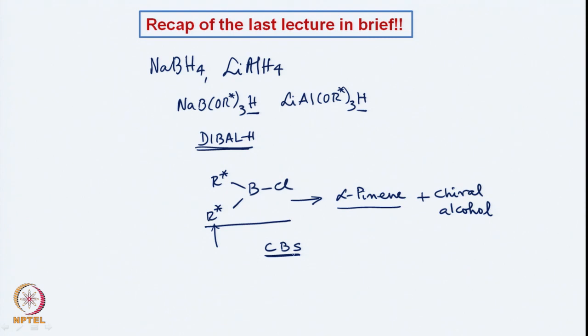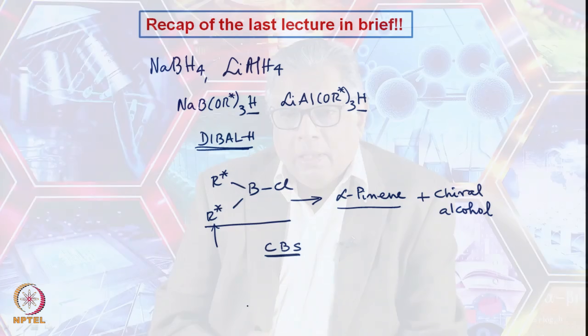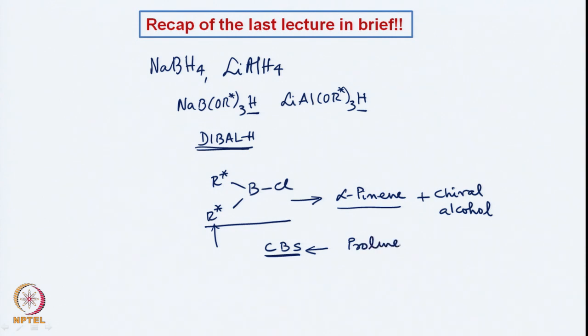But then we introduced the Corey-Bakshi-Shibata ligand, a chiral part which allows modification of BH₃. This Corey-Bakshi-Shibata catalyst allows the reduction of ketones to the corresponding alcohols in a predictable geometry. Before starting, we can choose which kind of Corey-Bakshi-Shibata ligand to use. As we discussed, it comes from proline, and we can take R-proline or S-proline depending on which enantiomerically pure alcohol is required.